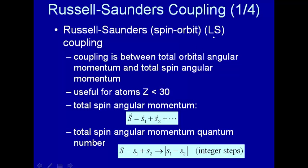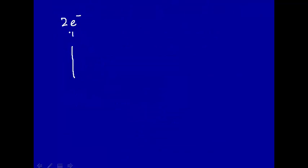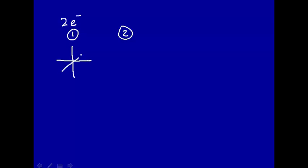Russell-Saunders coupling is also called LS coupling. What we do is first couple the angular momenta. Let's take two electrons. These two electrons each have a spin of one half. So S for each electron equals one half.